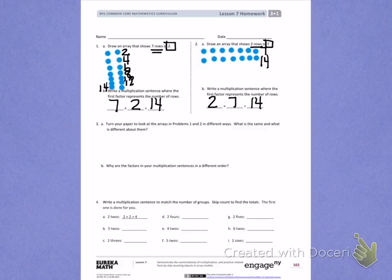turn your paper so you can see how you drew the arrays in a similar way and in a different way. Write one thing that is the same about the arrays and one thing that is different about the arrays.